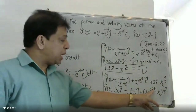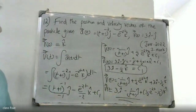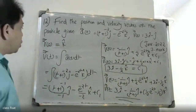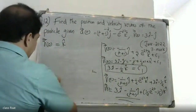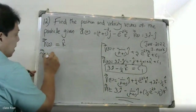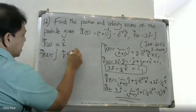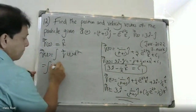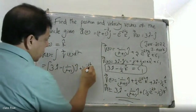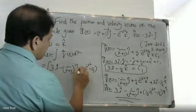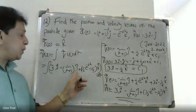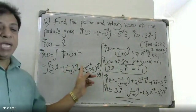The velocity vector is v of t equals 3i minus 1 by t plus 1 into j, plus 1 by 2 e raised to minus 2t, minus 1 by 2 k. Now to find the position vector r of t, we integrate v of t with respect to t.